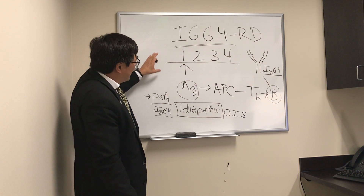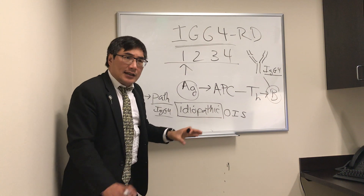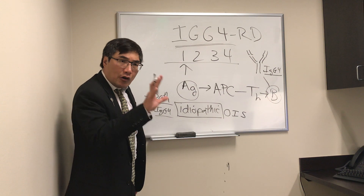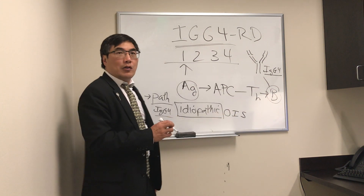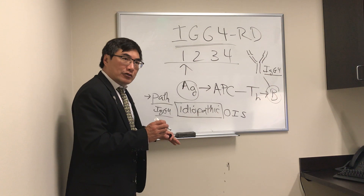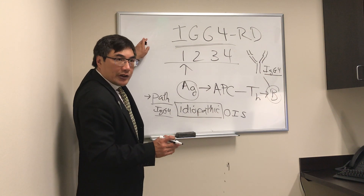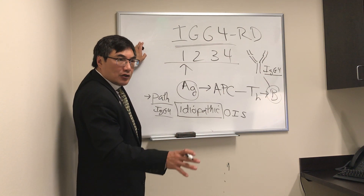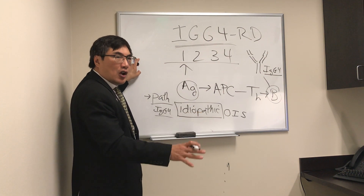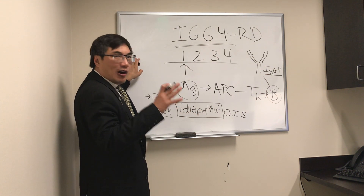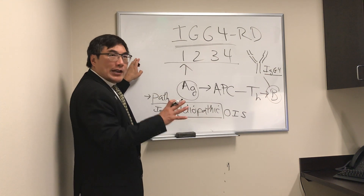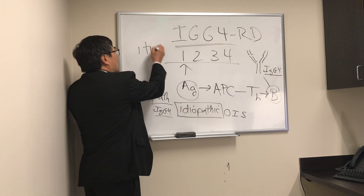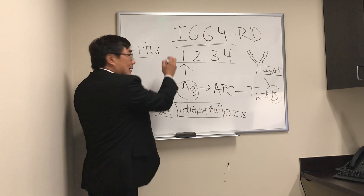When dealing with IgG4-related disease, a key question is whether the inflammation is confined to the orbit or not. Every subspecialty of medicine has their own version of idiopathic inflammatory pseudotumor. It might be in the salivary glands, the thyroid gland — known as Riedel's thyroiditis — retroperitoneal fibrosis, the pulmonary version, the cardiac version, or the renal version.